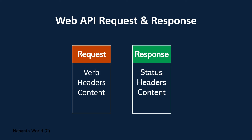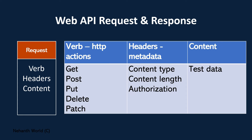Let's look into the request object in detail. The verb is an HTTP action. The actions available in web API are: GET, POST, PUT, DELETE, and PATCH. There are other verbs as well, but these are the main actions we will go through in this series.